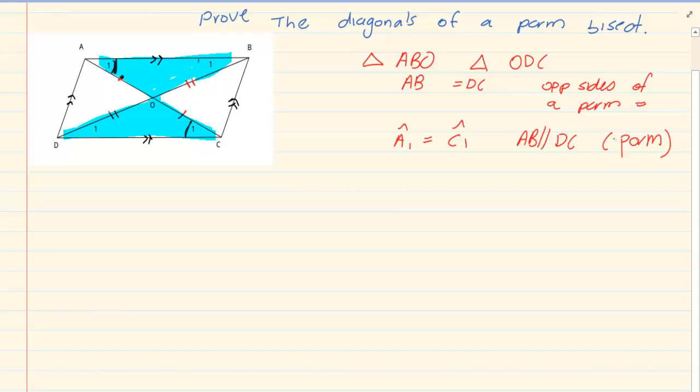Then we have that B1 is equal to D1. Again, why would B1 equal to D1? Because the same parallel lines and the reason is that it's a parallelogram.